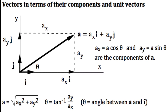From Pythagoras, a is equal to the square root of a x squared plus a y squared, and theta equals tan to the minus 1 a sub y over a sub x.